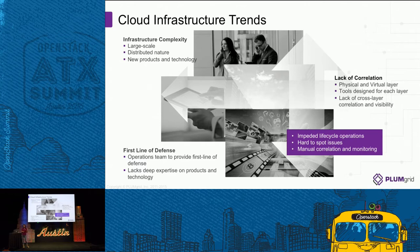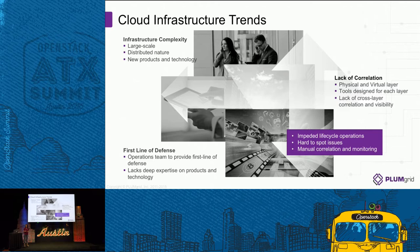Operating a distributed system requires inherent learning and understanding of the different pieces of the puzzle needed to operationalize it from a complete lifecycle perspective. The other aspect is that the operational team, the first line of defense, is not necessarily always super familiar with OpenStack and SDN and all the different pieces of the puzzle. So how do we help this group become effective from day zero of deploying a cloud, especially from a networking perspective?